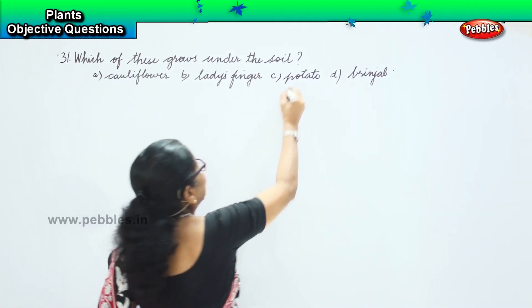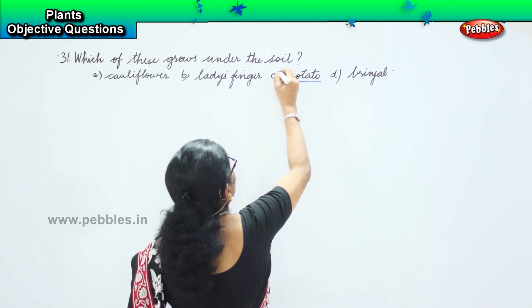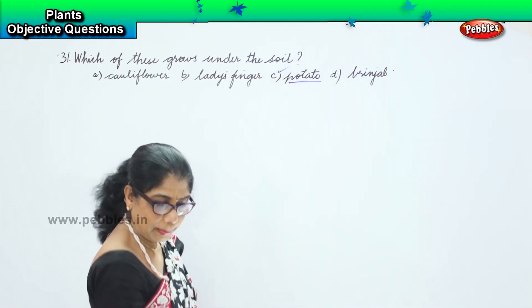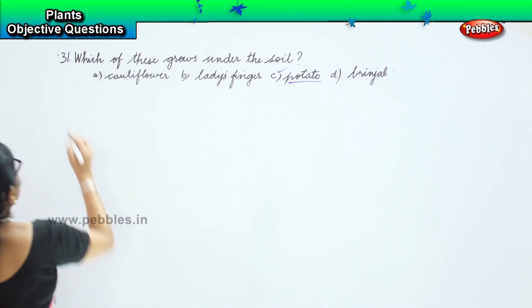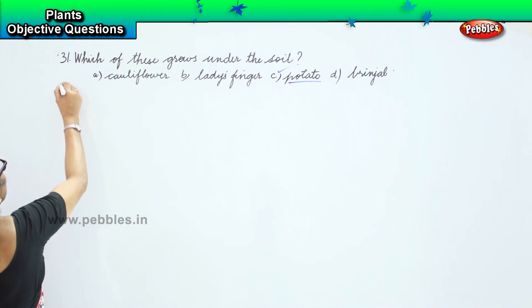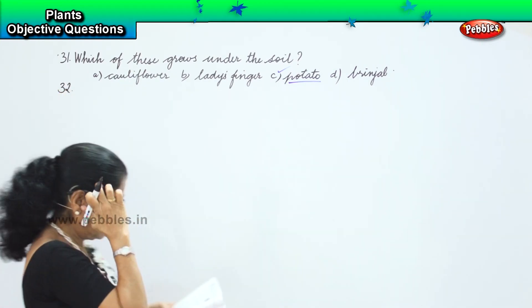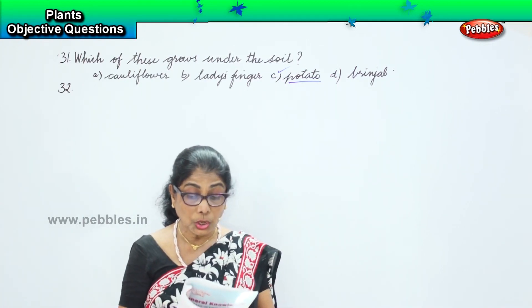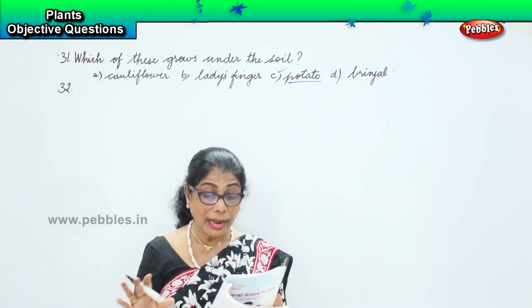It's potato that grows under the soil. And the next question is: which of these plants grow on land?